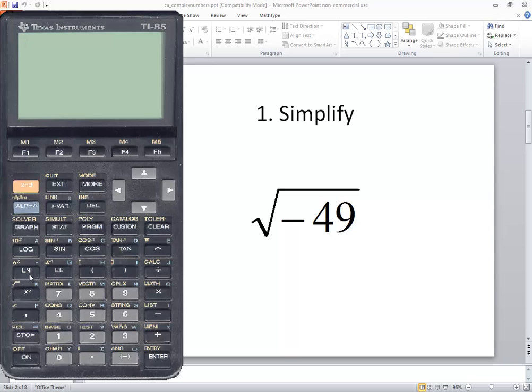I'm going to do my square root, so I do second and then the x squared. I'll put a beginning parentheses, negative 49, closing parentheses.